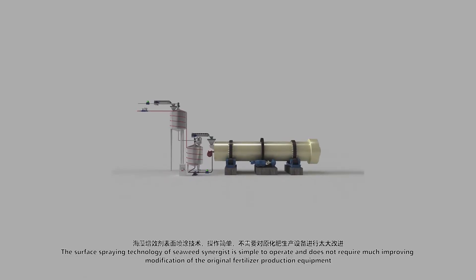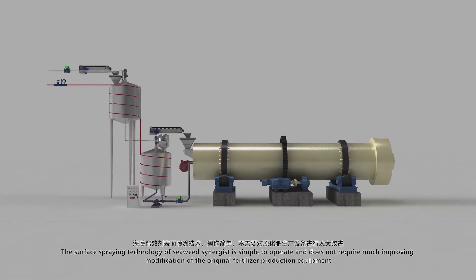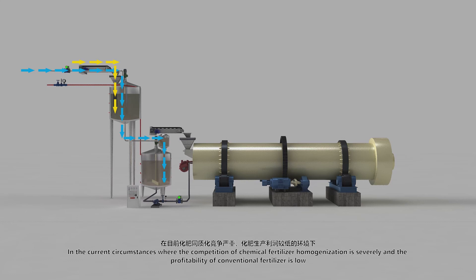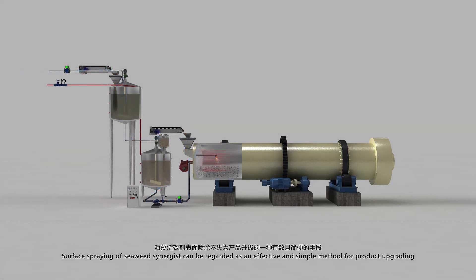The surface spraying technology of seaweed synergist is simple to operate and does not require much improving or modification of the original fertilizer production equipment, which can be used for surface spraying of BB fertilizer, granular fertilizer, etc. In the current circumstances where the competition of chemical fertilizer homogenization is severe and the profitability of conventional fertilizer is low, surface spraying of seaweed synergist can be regarded as an effective and simple method for product upgrading.